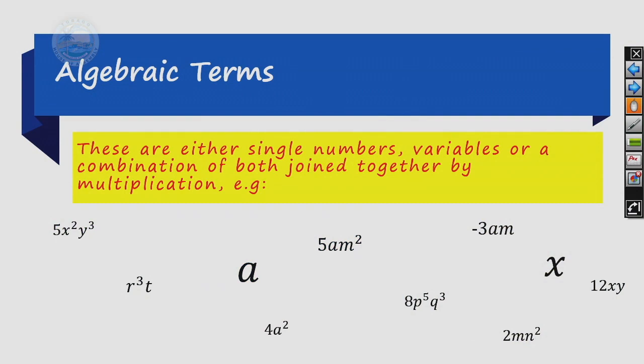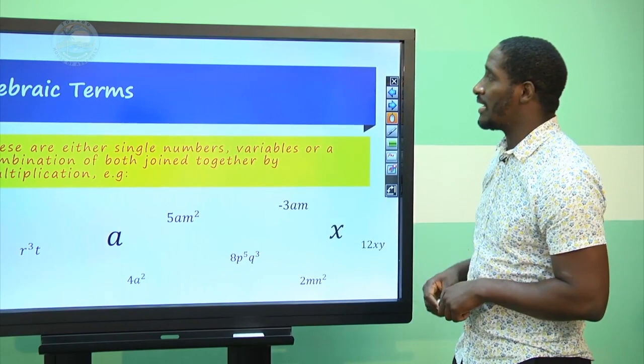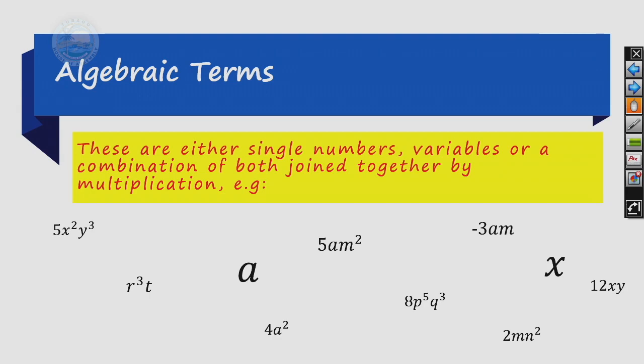Variables are the symbols that we utilize in mathematics to represent certain quantities. The next definition we want to look at is algebraic terms. In mathematics and in algebra, we would often speak to algebraic terms. Algebraic terms are either single numbers or variables, or a combination of both joined together by multiplication. Examples include 5x²y³ and 5am².